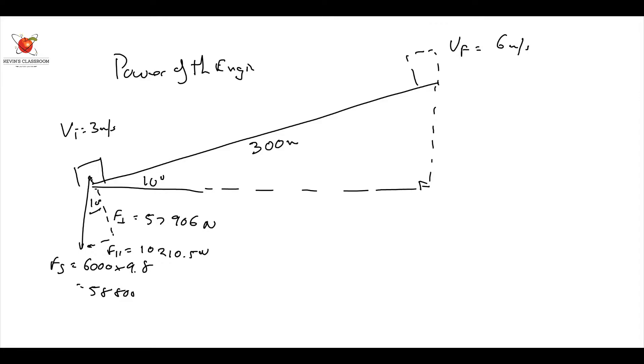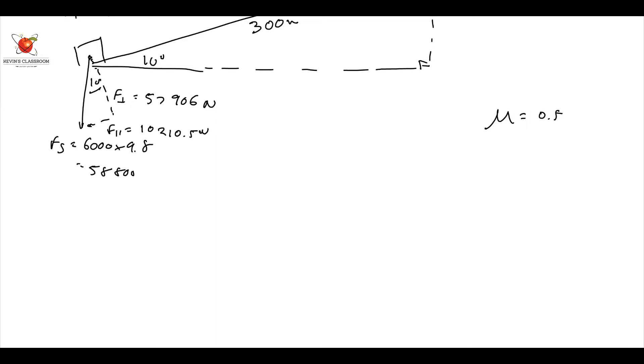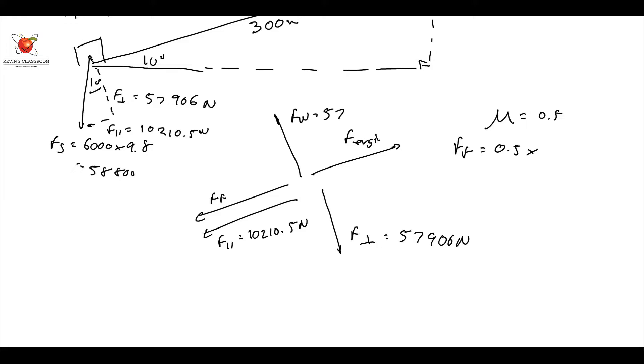Right, they've also told me that mu is equal to 0.5. So obviously I've got frictional forces. Let's draw the free body diagram. Right, the free body diagram is going to look like this. I have got FF and coming down the slope, I have got F parallel, which I've just worked out, which is going to be 10,210.5 newtons. I've also got here F perpendicular, which is 57,906. Why do I want this one? I want it because of the friction. And I say FF is going to be equal to 0.5 times F normal. F normal in this case is going to be 57,906. Why? Because there's no oblique forces acting on this truck. So therefore, there we've got it.